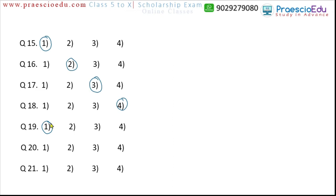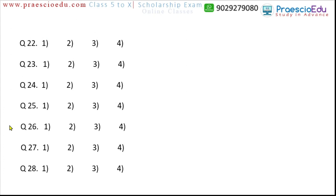Question 20: buttermilk, paneer, butter, and cake. Buttermilk, paneer, and butter are all made from milk, but cake is not. So option four, cake, is the different one. Question 21: May, April, September, and November. April, September, and November all have 30 days, but May has 31 days. So option one, May, is the different one.